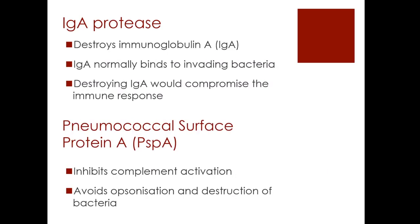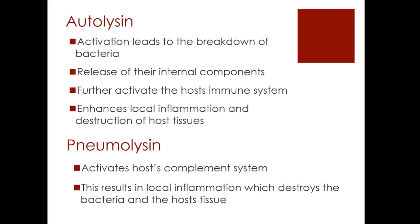The first toxin is IgA protease — an enzyme that destroys immunoglobulin A. IgA normally binds to invading bacteria and allows neutrophils to destroy them, so destroying IgA compromises the immune response. They also have the surface protein pneumococcal surface protein A (PspA), which inhibits complement activation — this complex immune surveillance system within our bodies. This essentially avoids opsonization and avoids destruction, which is one of its ways of evading the immune response.